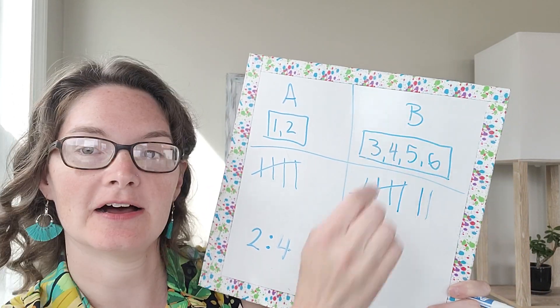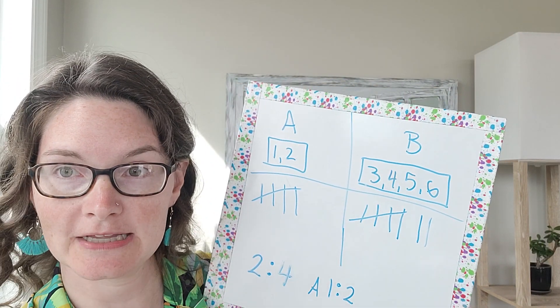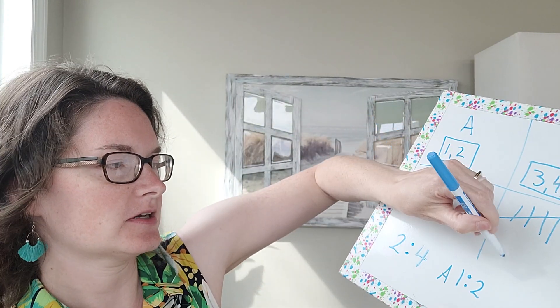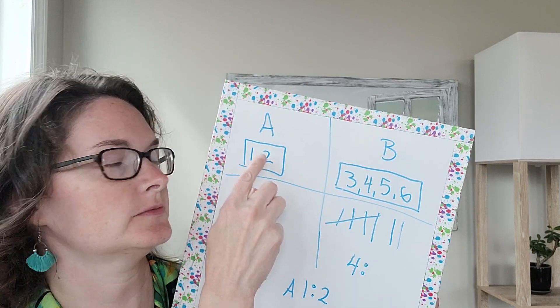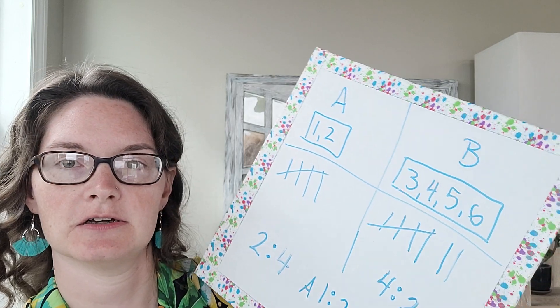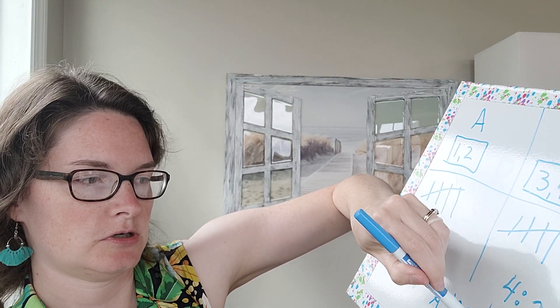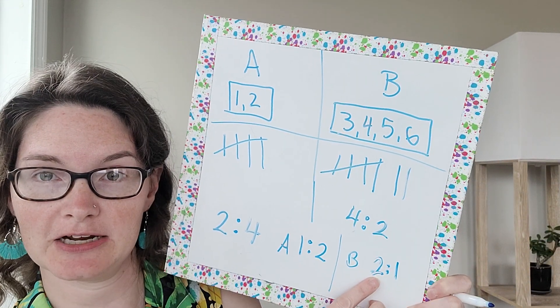Now for Group B — the first number is wins. How many opportunities to win? One, two, three, four. So we put four, then the colon, then opportunities to lose: two. That gives us 4:2. Dividing both sides by two to reduce it — my marker is running out — the odds of them winning are 2:1.